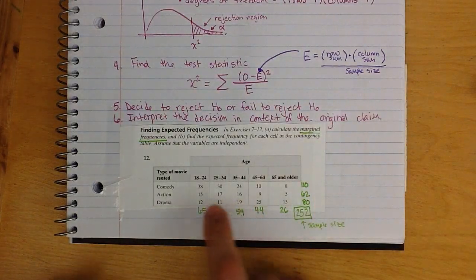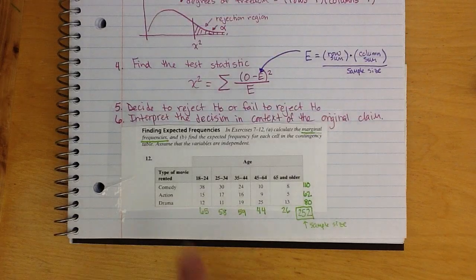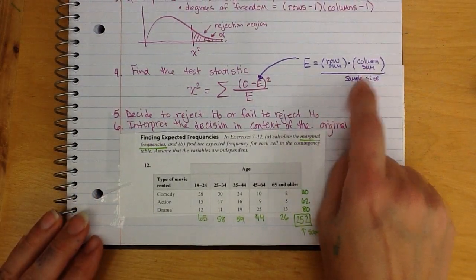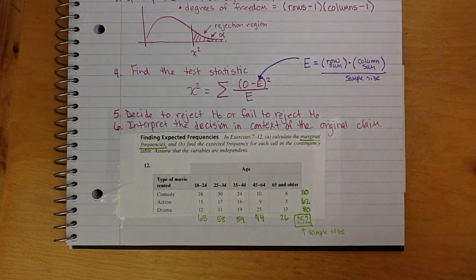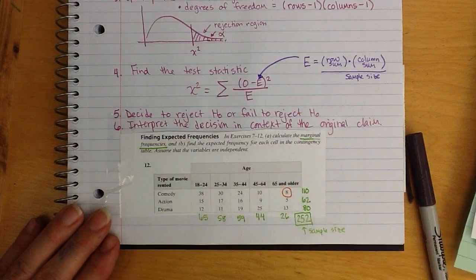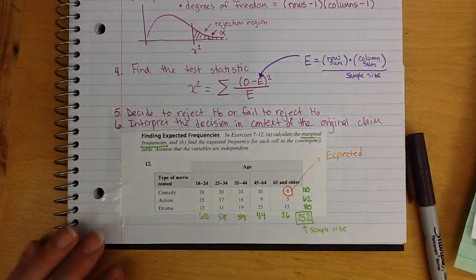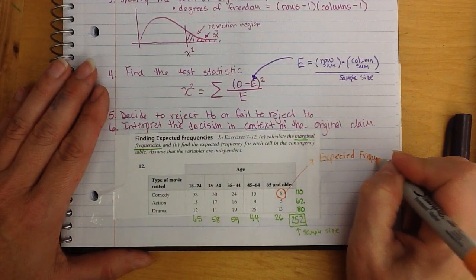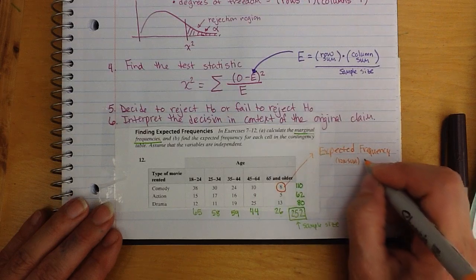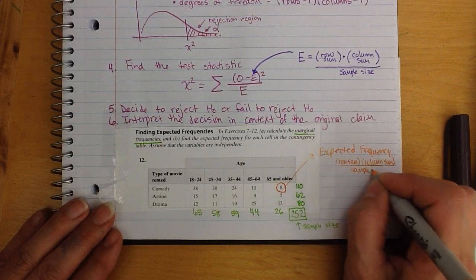Now, finding the expected value for any of these numbers in here, you have to do this formula right here. The observed numbers are the ones that are in the table. The expected values come from doing row sum times column sum divided by sample size.